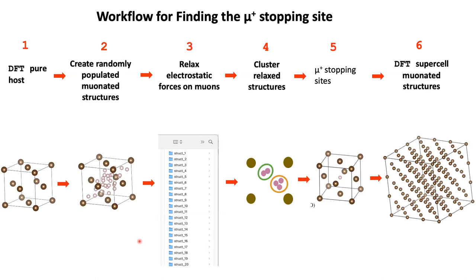This method is implemented via a workflow comprising essentially six steps. Step one: we run a density functional theory relaxation on the pure host material. Step two: we populate the interstitial space of the host material with randomly distributed muons. What the code does is generate a set of unit cells, each one with a muon in a different place, placed in separate folders. Then on each structure we calculate the electrostatic forces on the muons and move the muons in a direction that minimizes those forces.